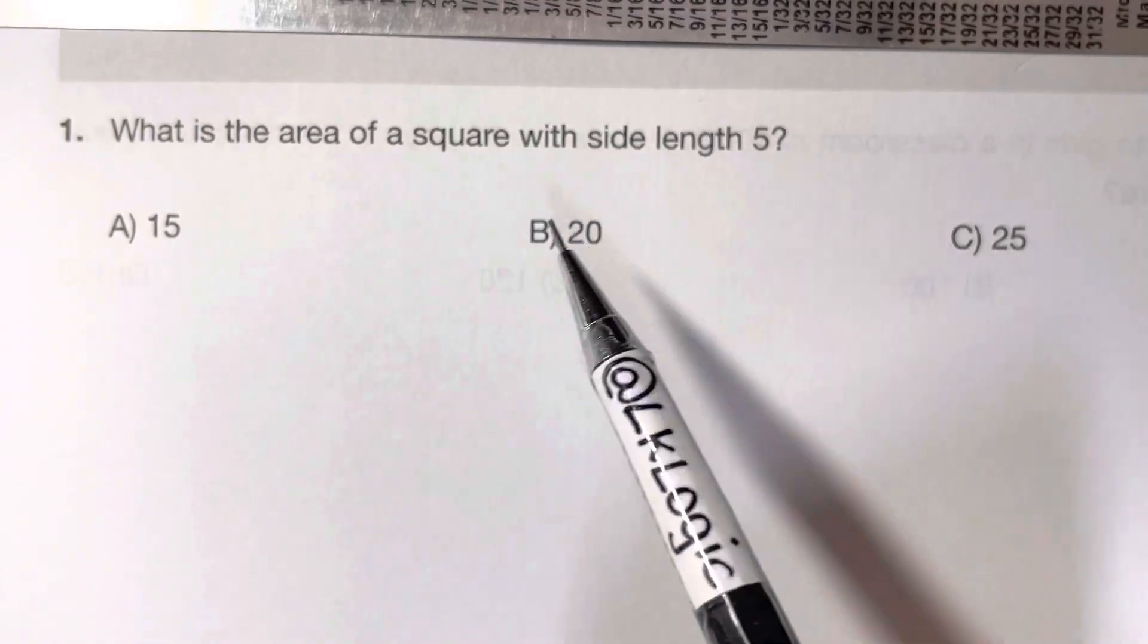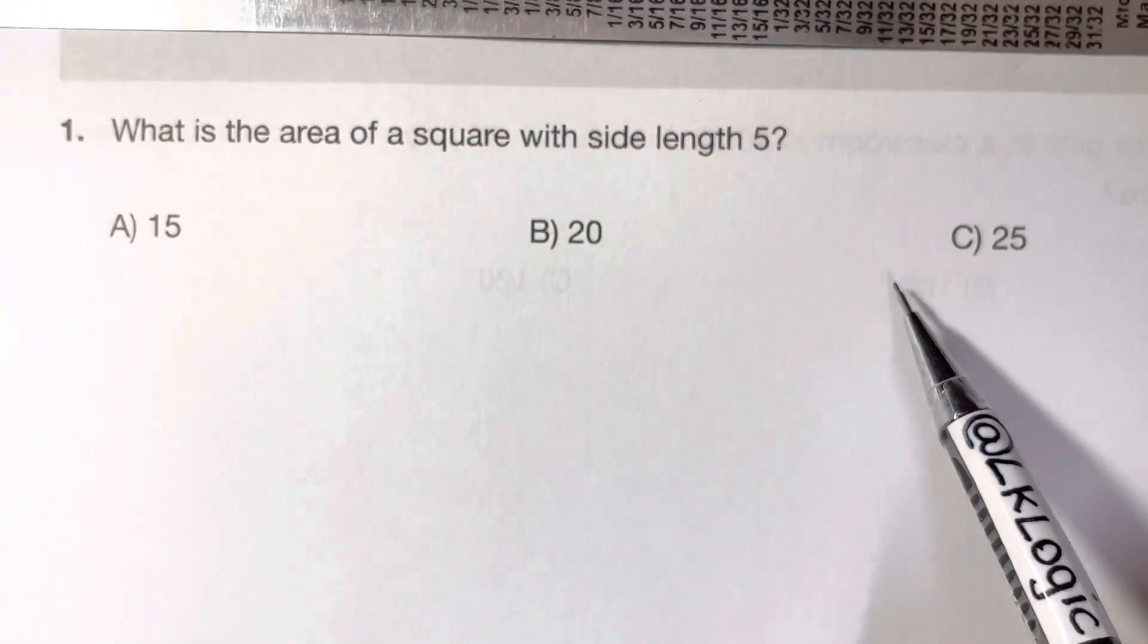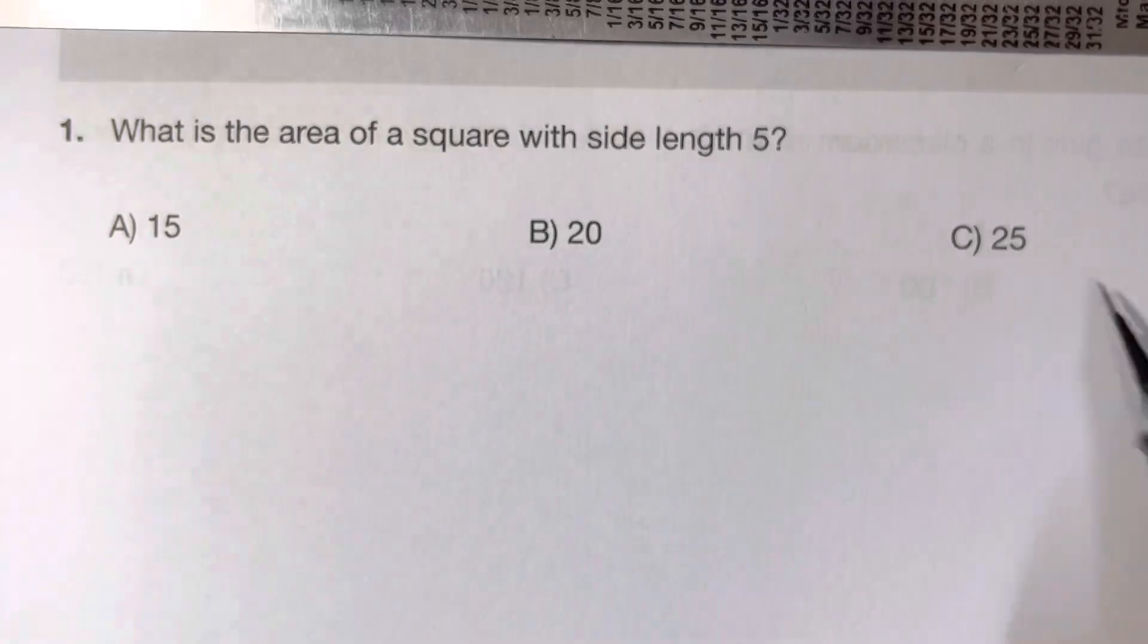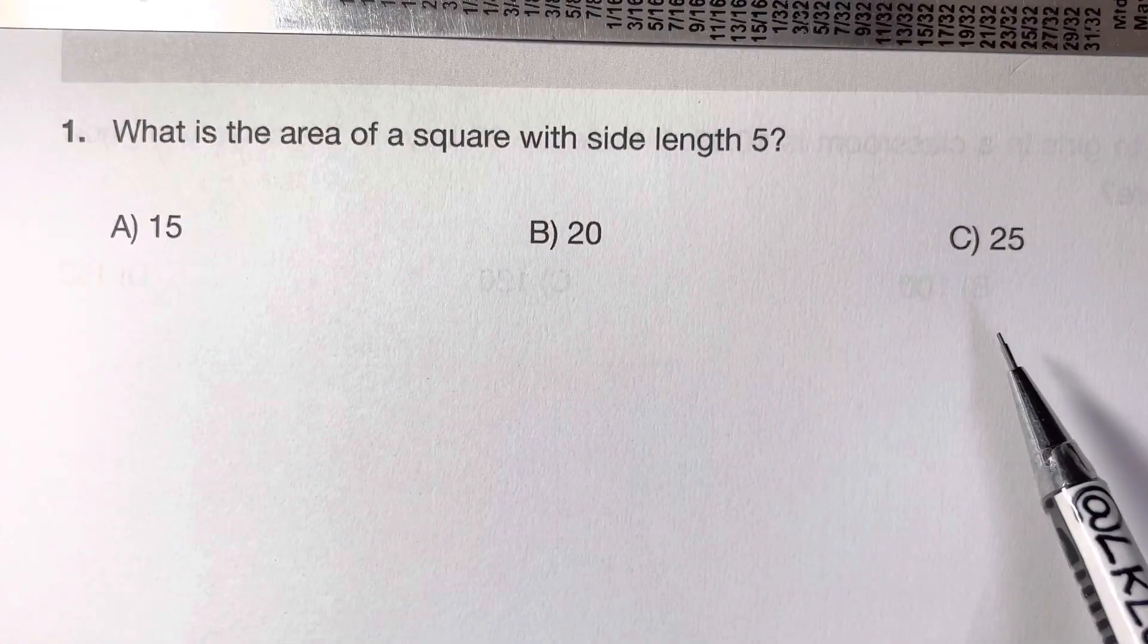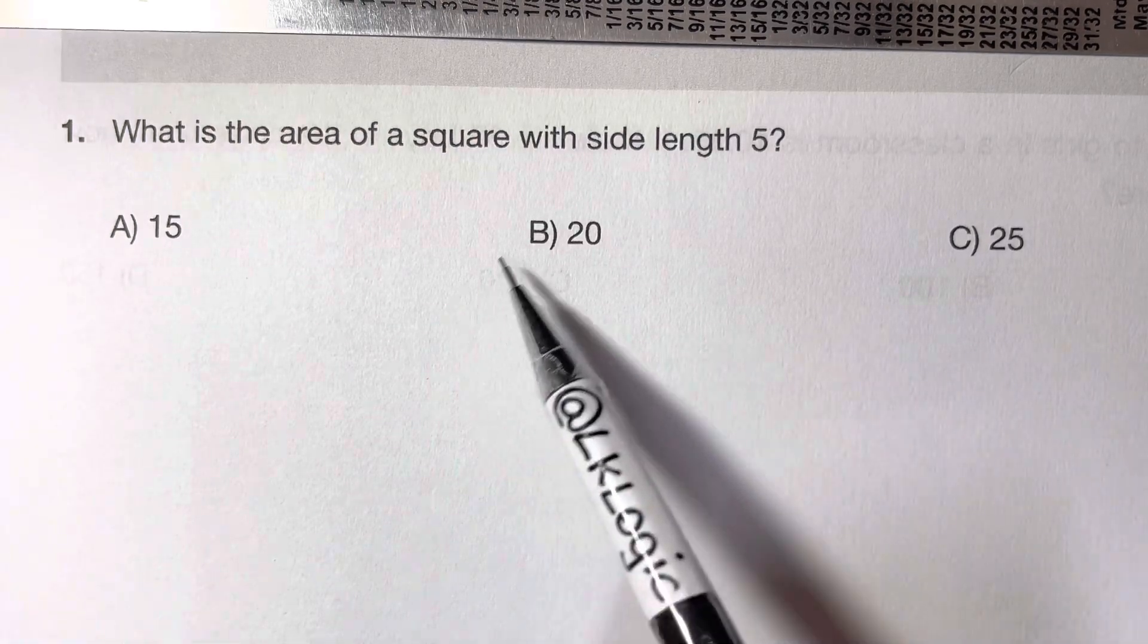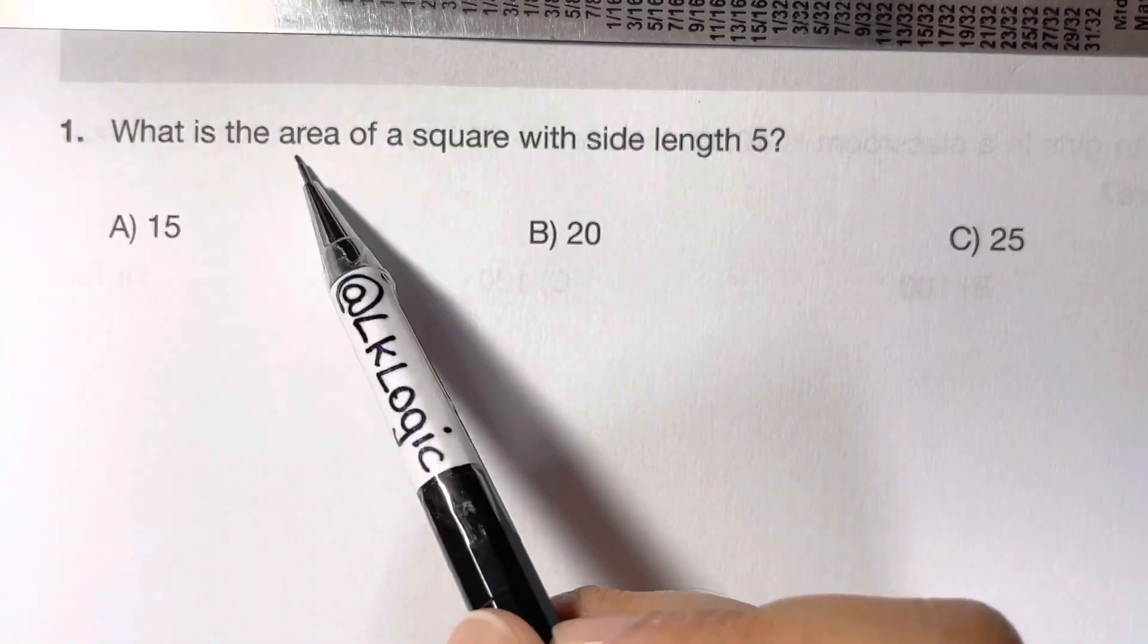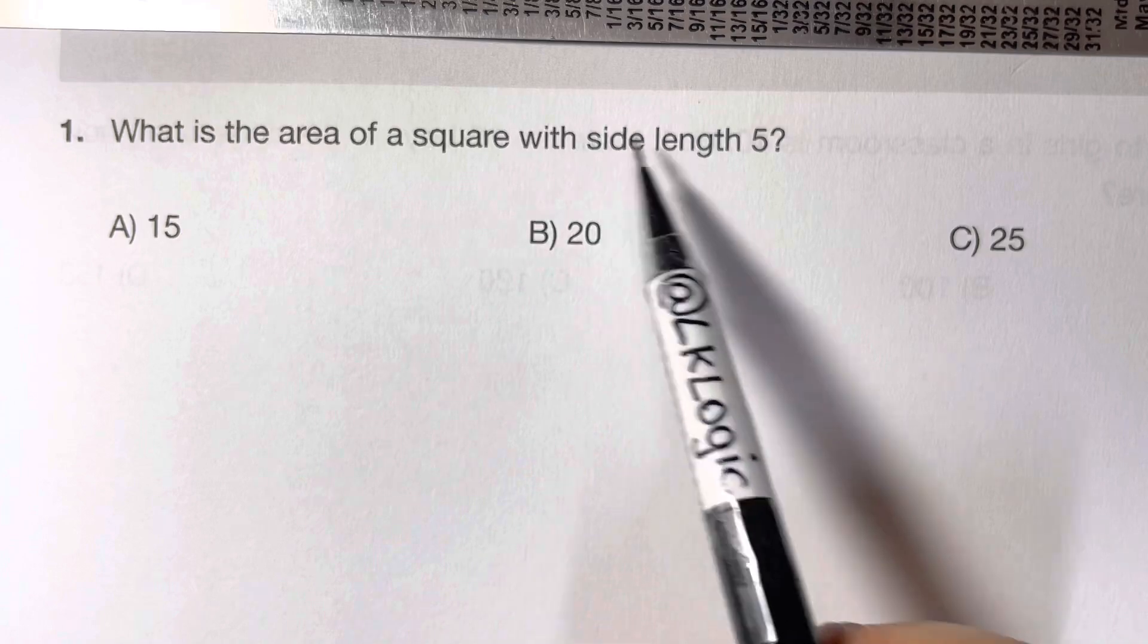Hi everyone, in this video we're going to solve quick five questions from Math Olympiad. So here, maybe they are easy, maybe they are not. Let's start with our first question: What is the area of a square with side length 5?